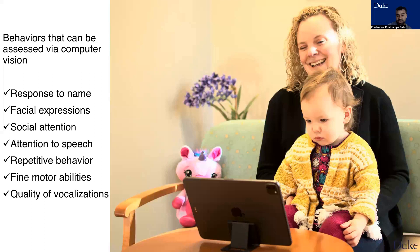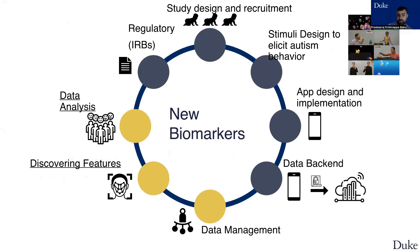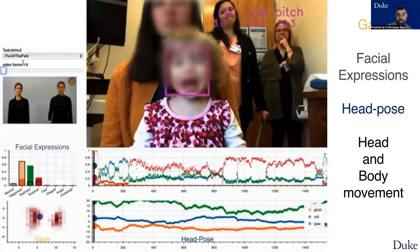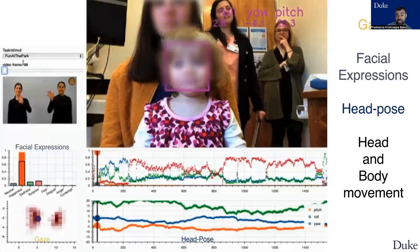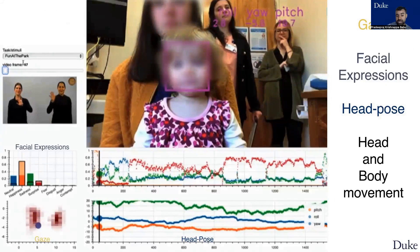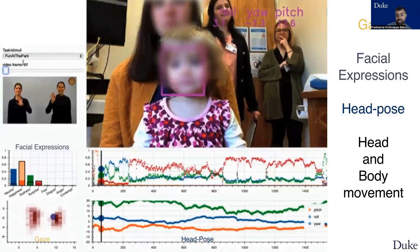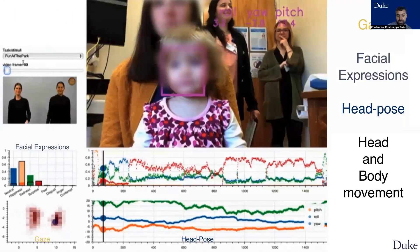Some of the behavioral responses that can be measured through computer vision are shown here. These are the steps involved in the design of our mobile app. Here is an example in real time of how the data is being processed in the background.